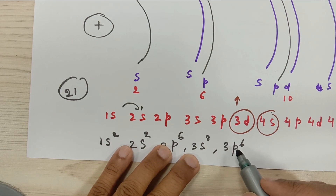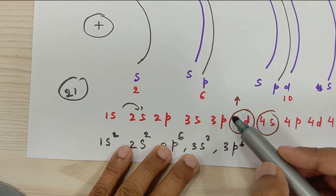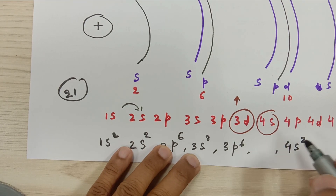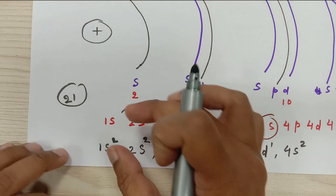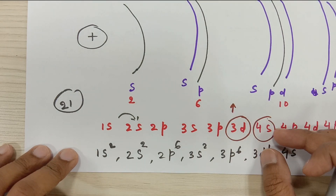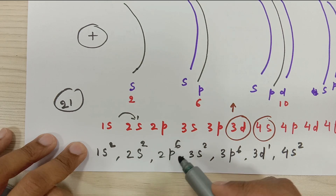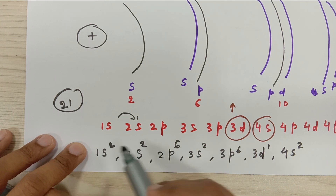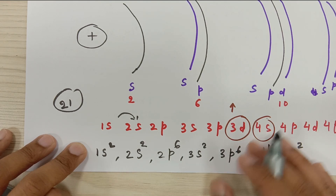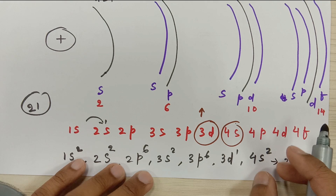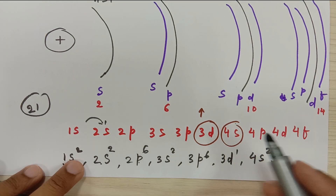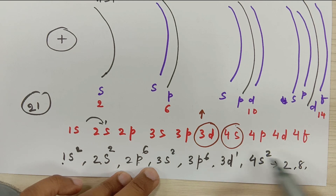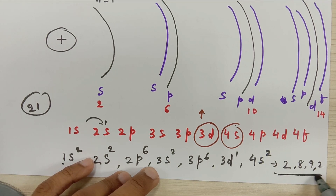After filling 18 electrons I still have 3 left. The electrons first go to the lower energy orbit 4S, giving 4S2 — that's 20. Then the remaining 1 electron enters 3D, giving 3D1. So the full configuration is 1S2, 2S2, 2P6, 3S2, 3P6, 4S2, 3D1. In Bohr's notation: first orbit has 2, second has 8, third has 6+2+1=9, fourth has 2 — so 2, 8, 9, 2.